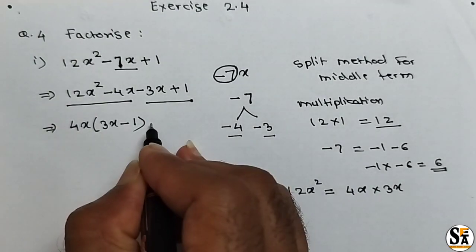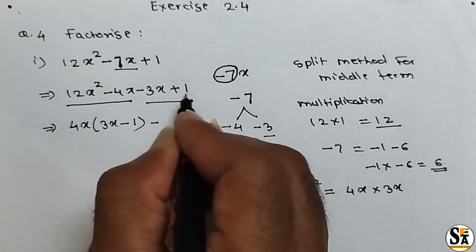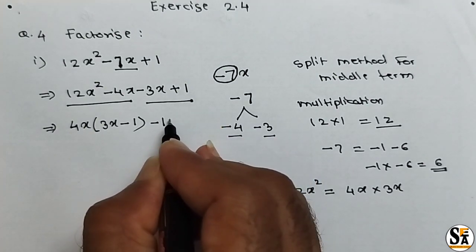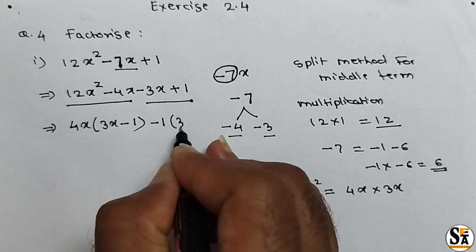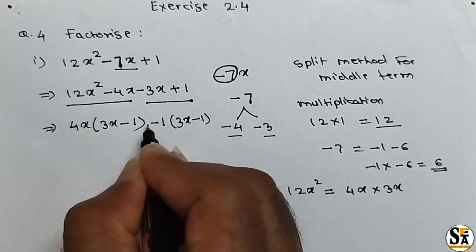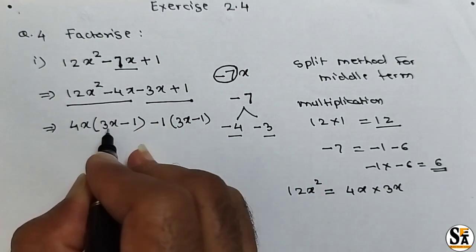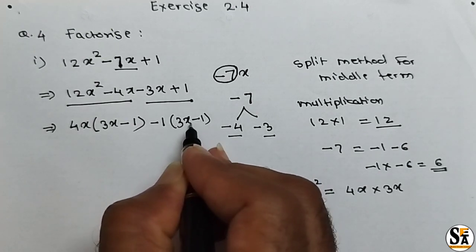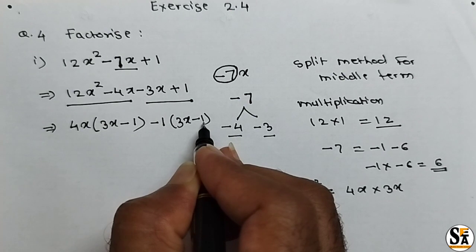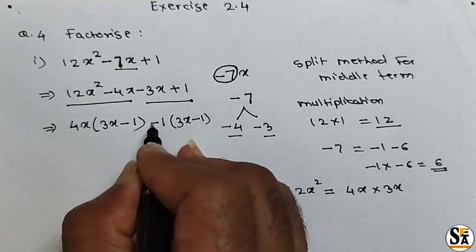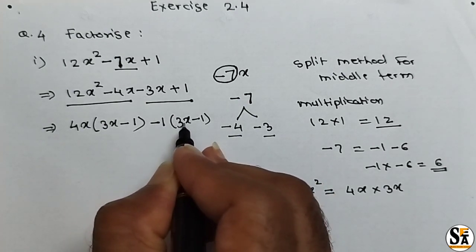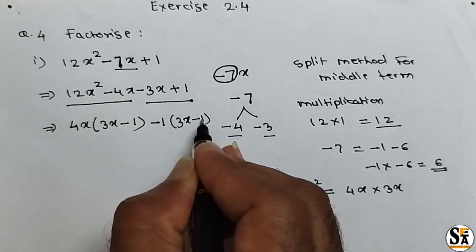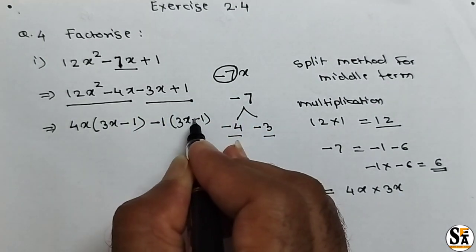In the next group, no factor is common. So we write minus 1 common here, and inside the bracket the remaining terms are 3x minus 1. Why minus 1? Because we need to bring 3x minus 1 as a common factor. Minus 1 into 3x is minus 3x, and minus 1 into minus 1 gives plus 1. That is why we have written minus 1 here.